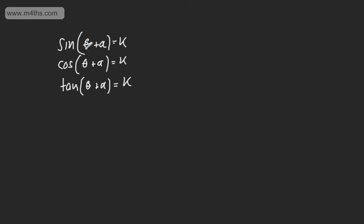Let's look at how we solve these. Examples include cos of theta minus pi by 3 is equal to 0.2, tan of x plus 15 degrees is equal to 1.6, and sine of theta minus pi by 4 is equal to 0.8. What we're going to do is solve and find initially a principal value for the angle theta plus alpha, then consider subsequent solutions by symmetry or by the nature of each trig function.